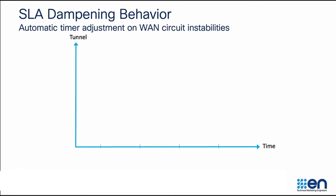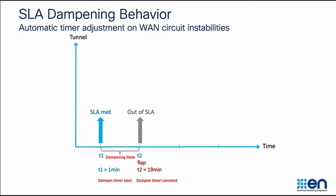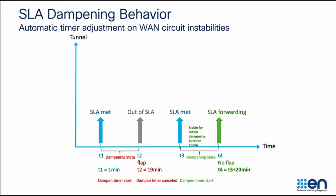To understand this better, let's say the tunnel was out of SLA. At T1, the tunnel starts to meet the SLA and the dampening timer gets started. But at T2, there was a flap on the WAN circuit, so the dampening timer gets cancelled. At a later point at T3, the tunnel starts to meet the SLA again and we start the dampening timer. If you are using aggressive mode, we monitor the WAN circuit stability for 20 minutes. If there are no WAN circuit flaps, at T4, the tunnel is confirmed stable and put back into SLA forwarding.